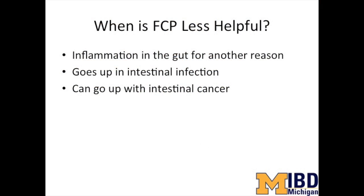When is the fecal calprotectin less helpful? There are three times when the fecal calprotectin can be less helpful. First, the fecal calprotectin detects inflammation anywhere in the gastrointestinal tract. This means that inflammation somewhere else — from inflammation in the esophagus, like from bad reflux, or inflammation in the stomach, like from a stomach ulcer — can give you a high fecal calprotectin when your intestines are in remission. The fecal calprotectin is not specific to active IBD in the intestine.